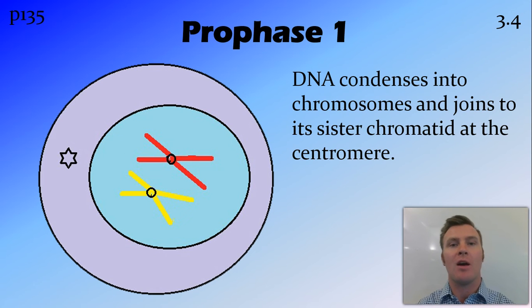Okay, moving into meiosis proper now. So that DNA condenses into the chromosomes and they join onto their sister chromatid at the centromere. Now, the sister chromatid is the one that has just been formed through that DNA replication and is exactly the same as each other. So we see the two reds here are joined at the centromere, which I've denoted by a black circle, and the two yellows are joined at the centromere. So each of those are sister chromatids.